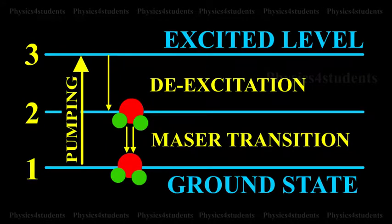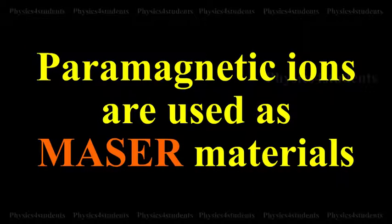In MASER, the emitted photon during the transition from the metastable state belongs to the microwave frequencies. The paramagnetic ions are used as MASER materials.